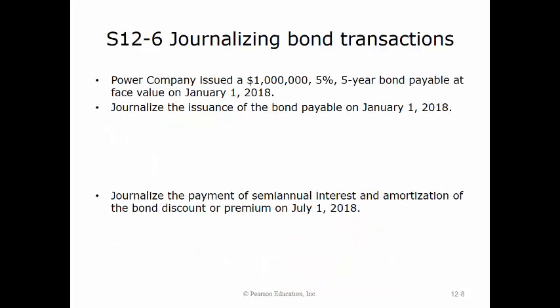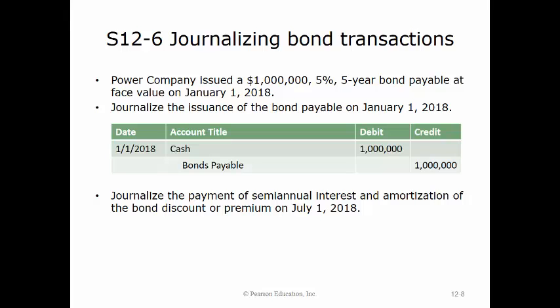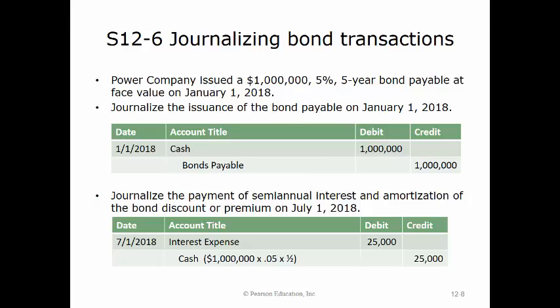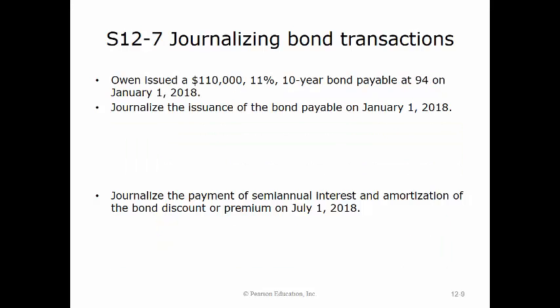Power Company issued a $1,000,000, 5%, five-year bond payable at face value on January 1st, 2018. To journalize the issuance, we debit cash and credit bonds payable for $1,000,000. To journalize the semi-annual interest payment on July 1st, 2018, we debit interest expense and credit cash for $25,000, equal to $1,000,000 times 5% times one-half. There is no discount or premium amortization.